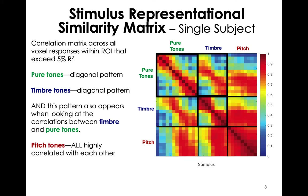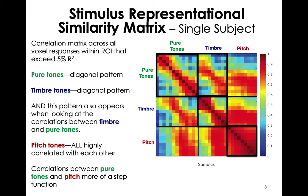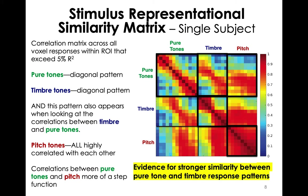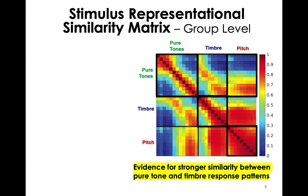The pitch tones, on the other hand, are all highly correlated with one another. The correlation between pure tones and pitch is more of a step function, where pitch is only strongly correlated with high pure tones. This is likely due to the fact that all pitch conditions have a high spectral centroid. The stronger similarity between pure tone and timbre activity patterns suggests tonotopy is more likely a map of spectral content than fundamental frequency. And here's a group level matrix that looks very similar.